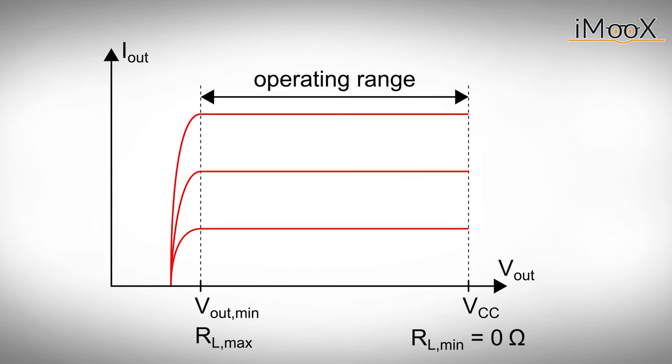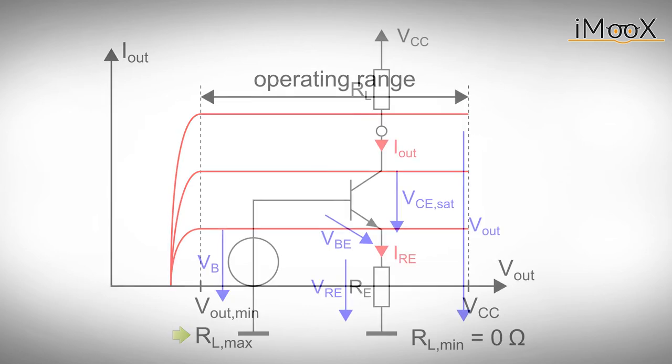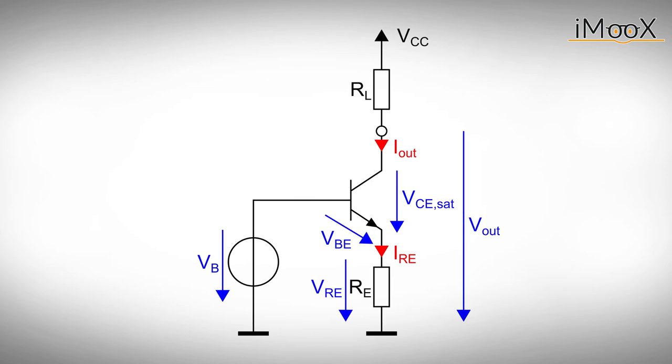We can translate this to a minimum and maximum load resistance for our current source. While the current source has no problem handling a short as its load, there is a maximum resistance we are allowed to connect to the output. The lower boundary for the output voltage is governed by the saturation voltage of our bipolar transistor. This means the minimum collector emitter voltage for which the bipolar transistor operates in the active regime. So we can calculate the minimum output voltage. Hence the voltage VBE influences the output current and the minimum output voltage.